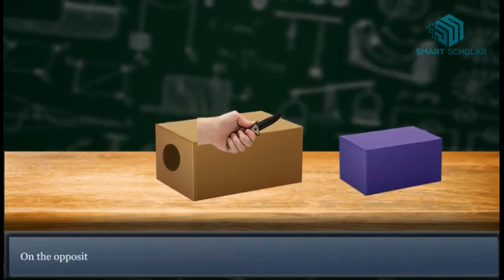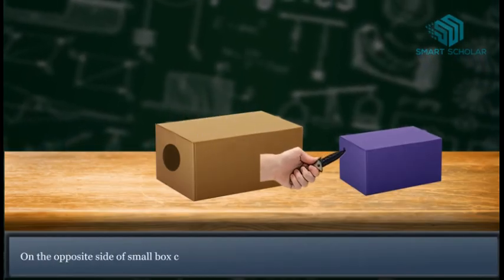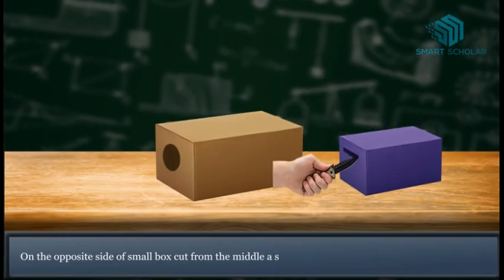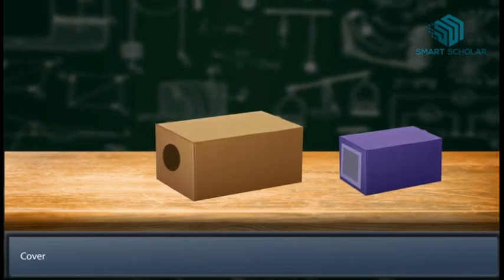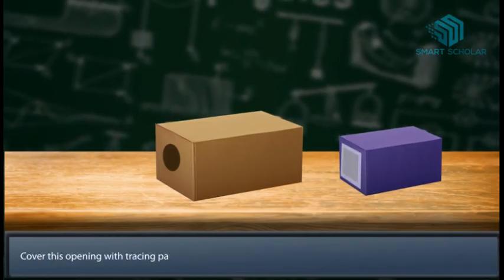On the opposite side of the small box, cut from the middle a square of about 5-6 cm. Cover this opening with tracing paper.